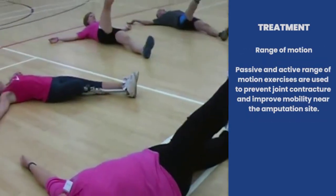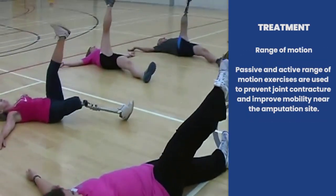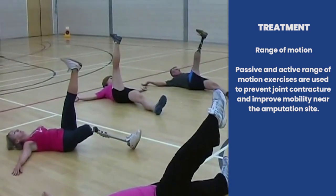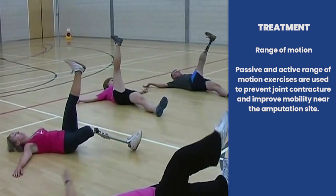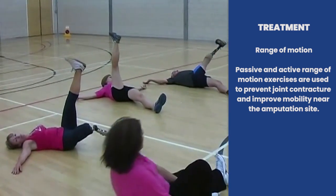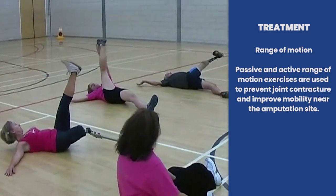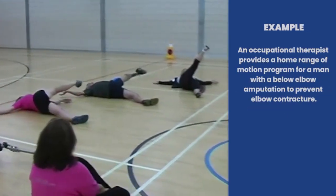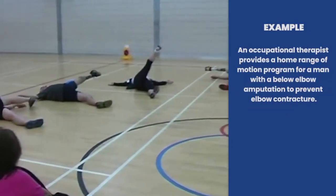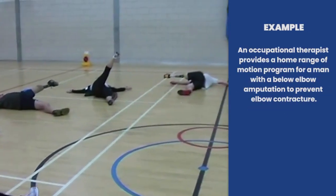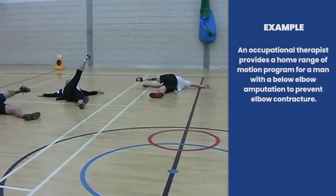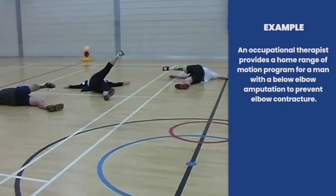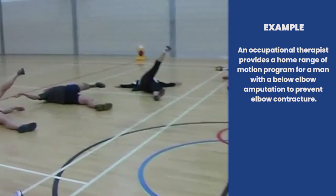Range of motion: passive and active range of motion exercises are used to prevent joint contracture and improve mobility near the amputation site. For example, an OT provides a home range of motion program for a man with a below-elbow amputation to prevent elbow contracture.